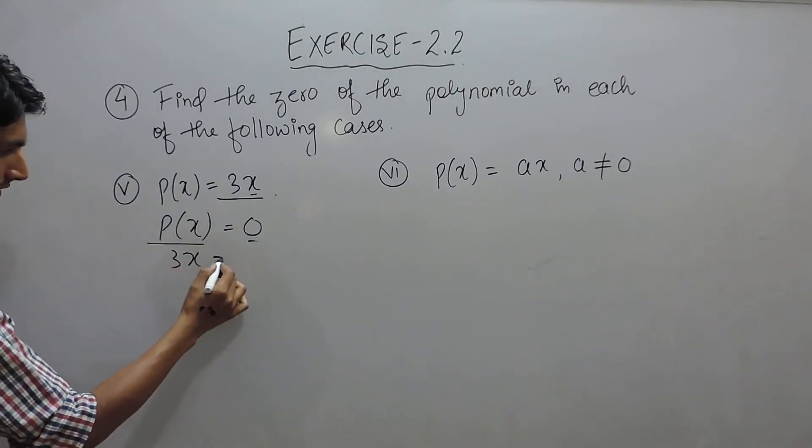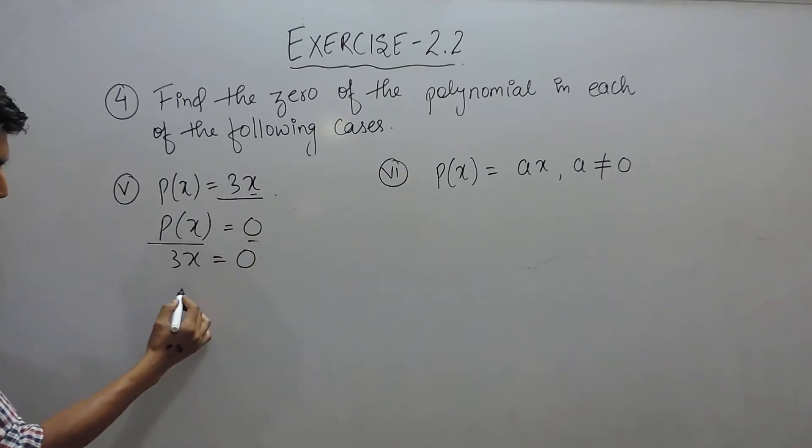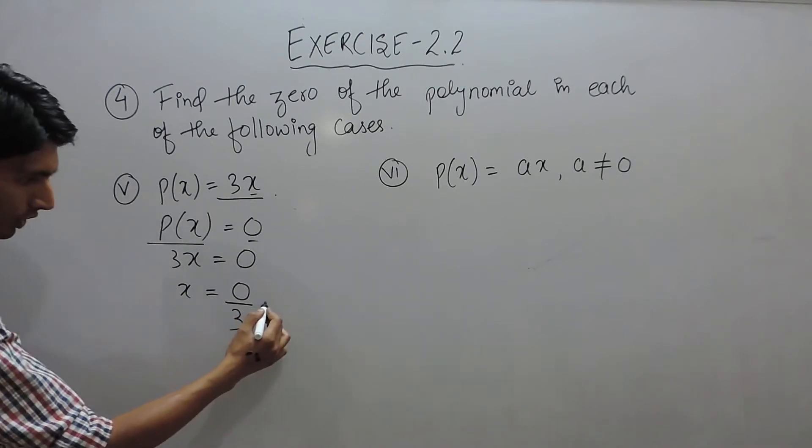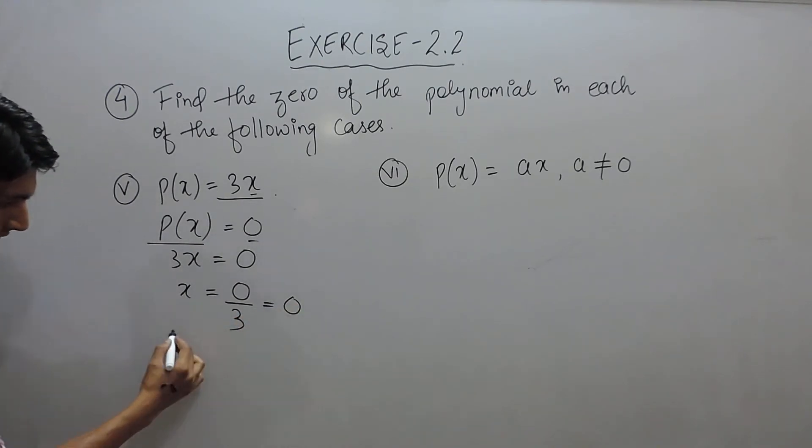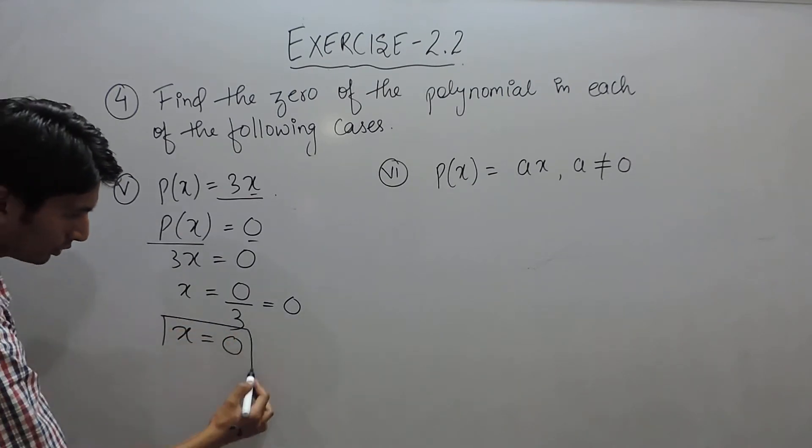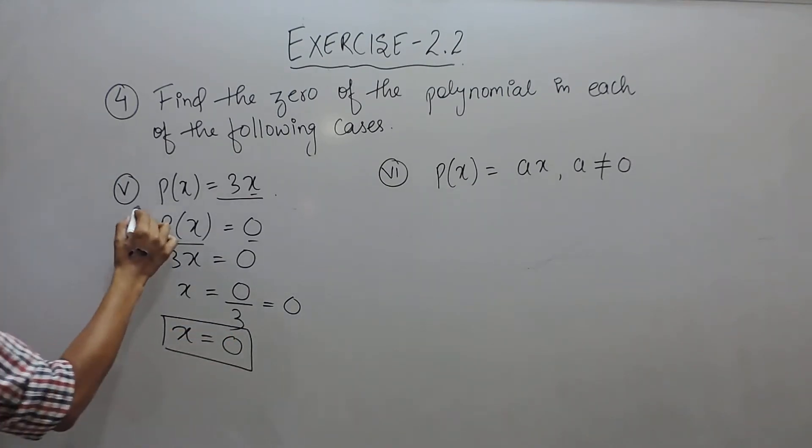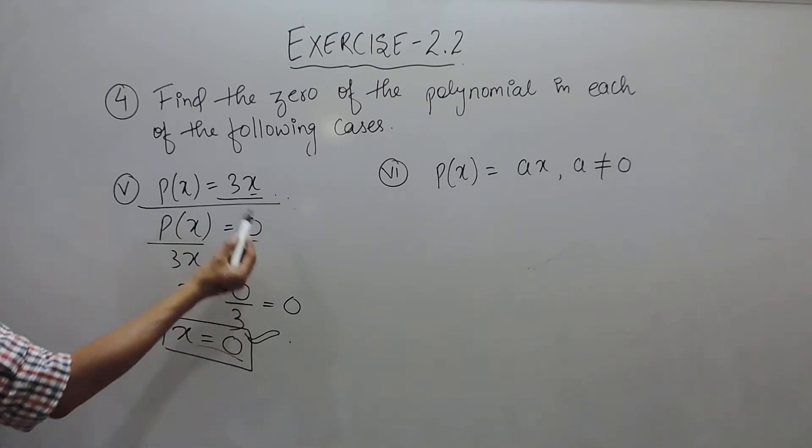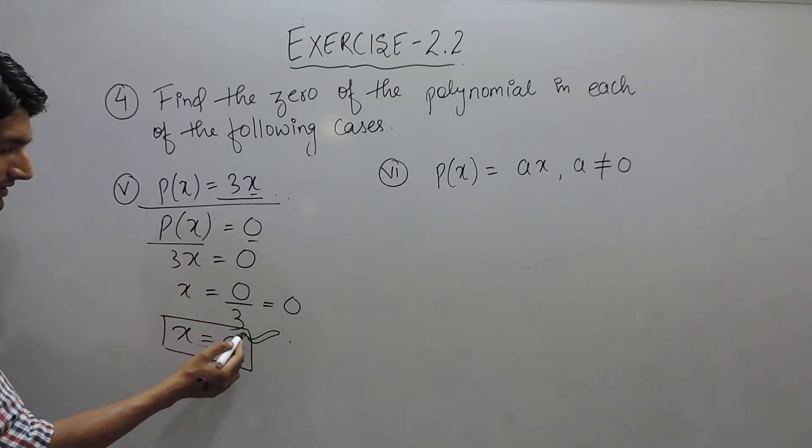So 3x is equal to 0. The value of x must be 0 upon 3, or you can say 0. So the value of x must be equal to 0 so that this polynomial becomes 0. The zero for this polynomial is 0.